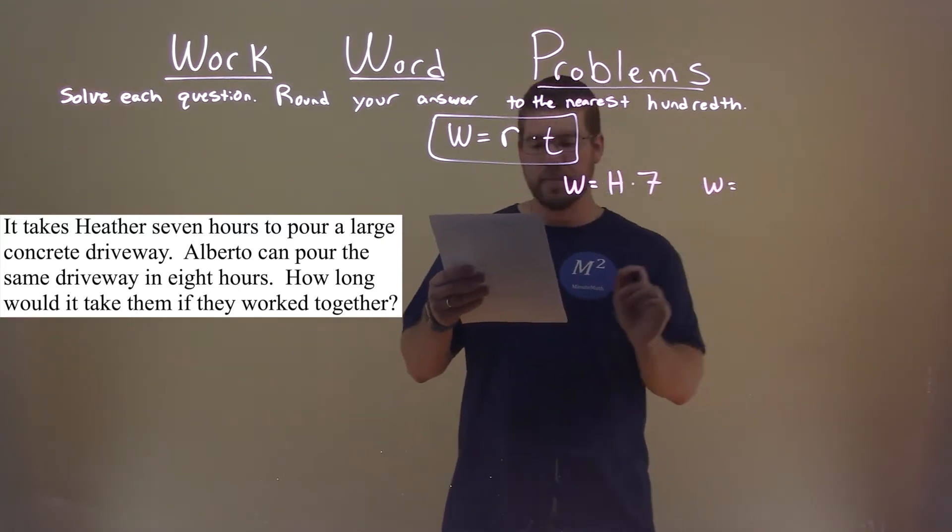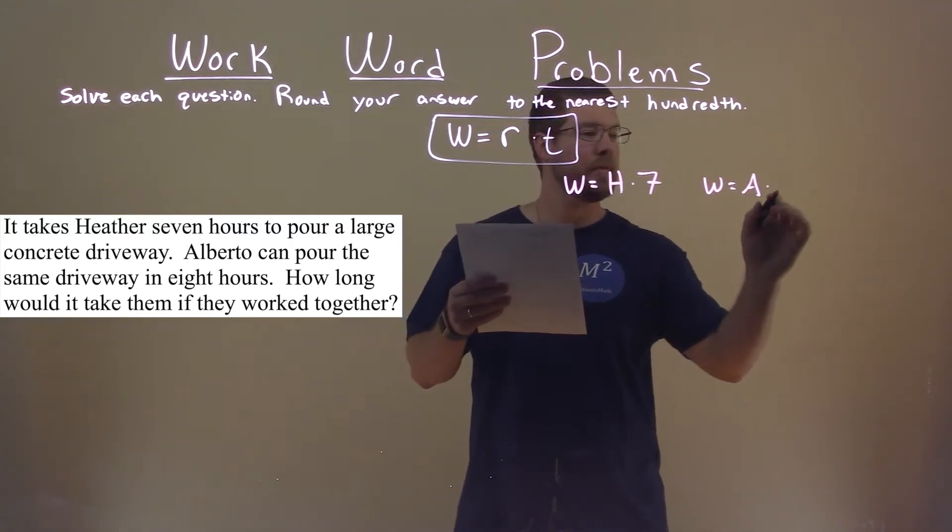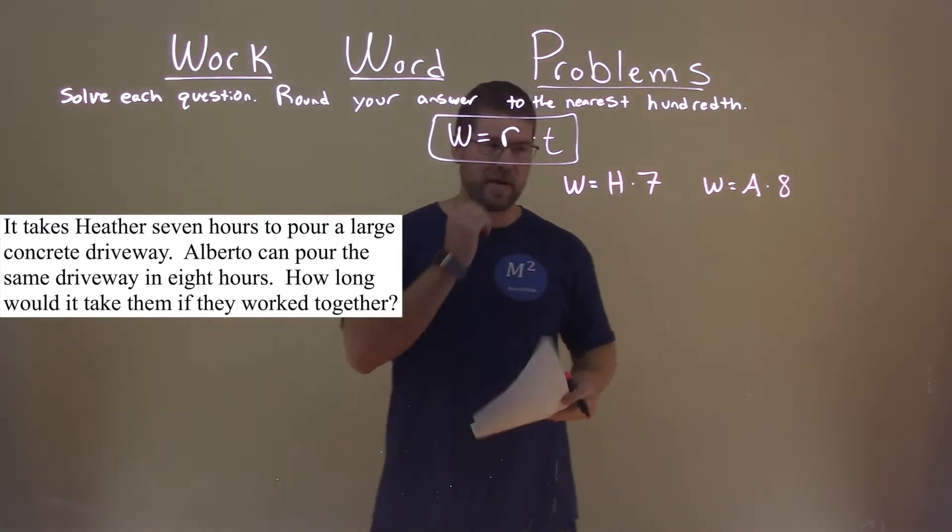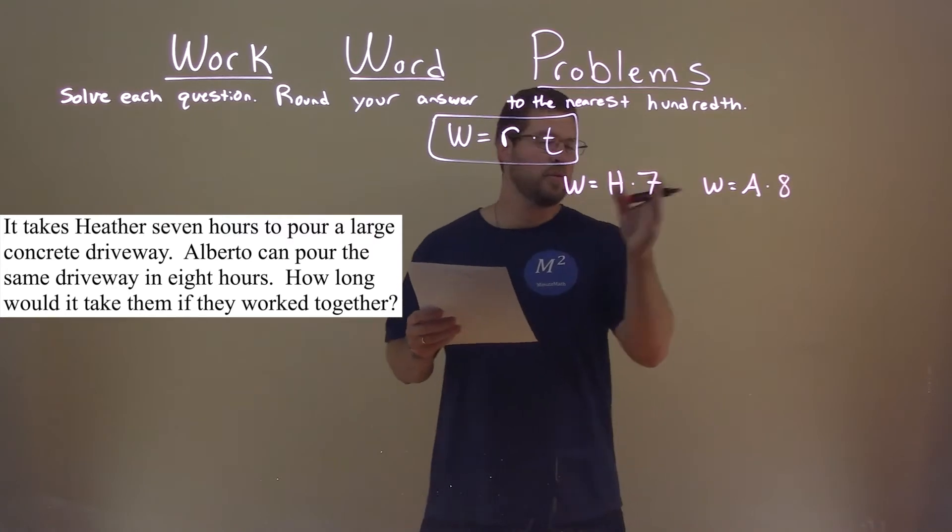Alberto does the same job, and his rate is eight hours. So now we have two little equations here that we can use later.